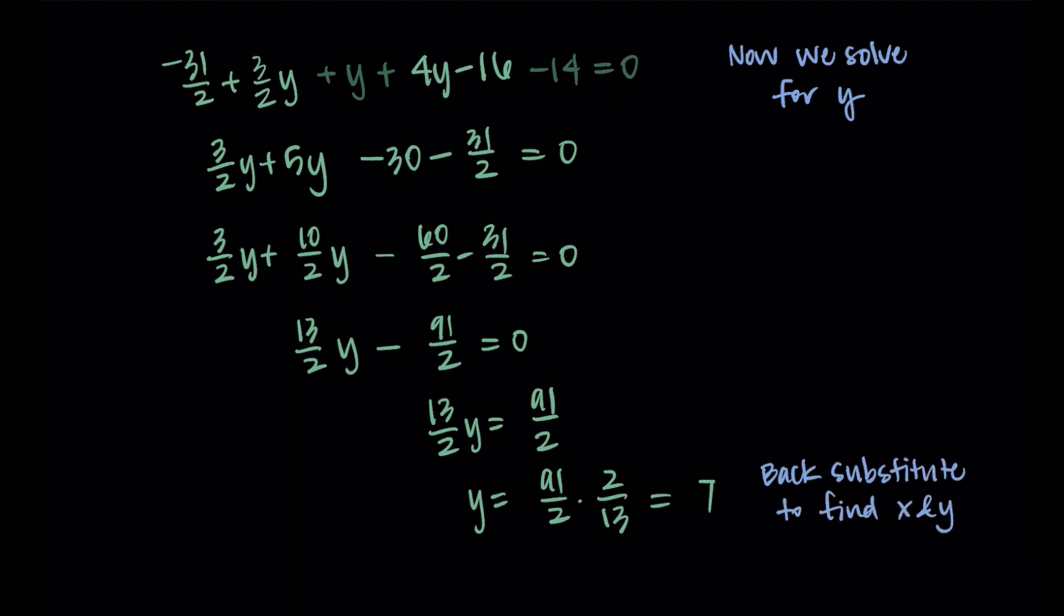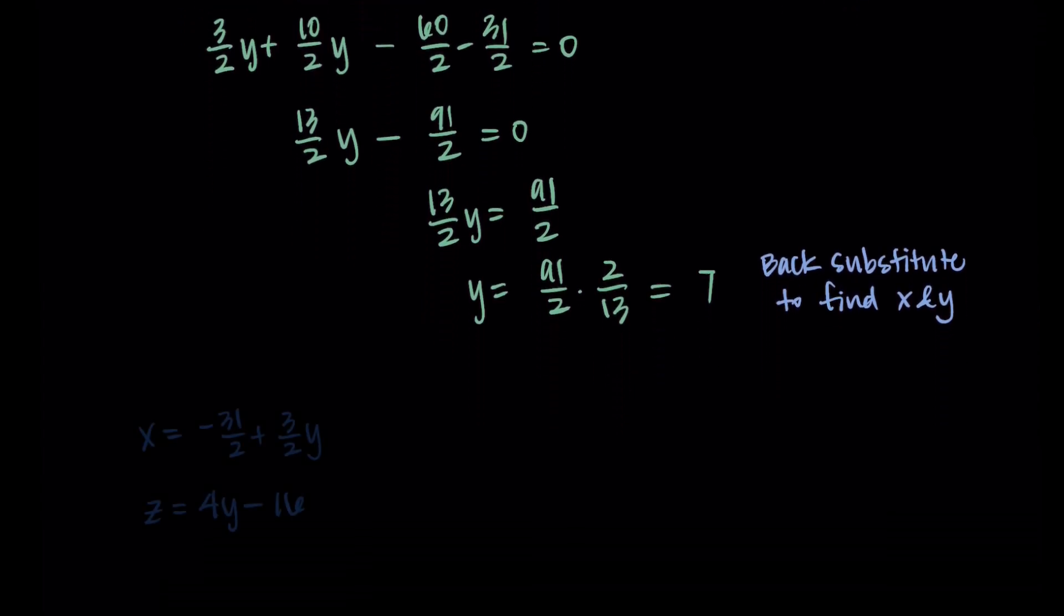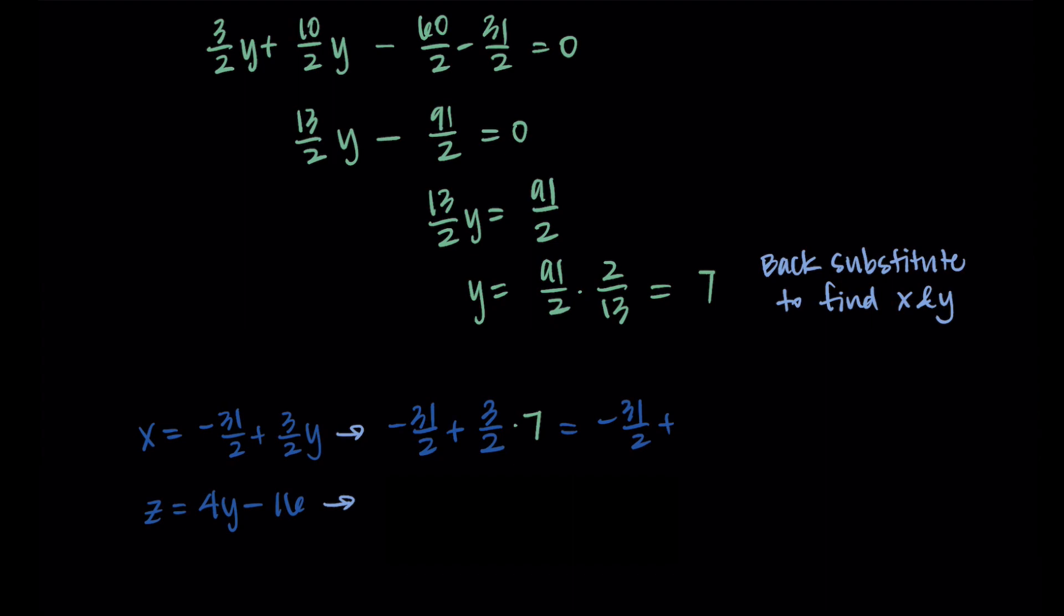Now I just need to back substitute to find my x and my z values. When I do this, I substitute in my y equals 7 into both of my x and z equations. So I'm getting that x is equal to negative 31 over 2 plus 3 over 2 times 7. That's negative 31 over 2 plus 21 over 2, which is negative 10 over 2, or negative 5. I repeat this for z. So I get that z is equal to 4 times 7 minus 16. That's 28 minus 16, which is 12. So there we go. We have my x, y, and z. We'll write that as a coordinate point. It's negative 5, 7, 12. And that is my final answer to this system.